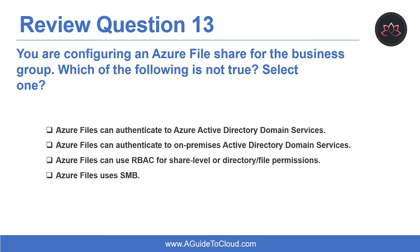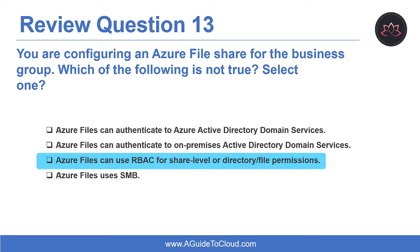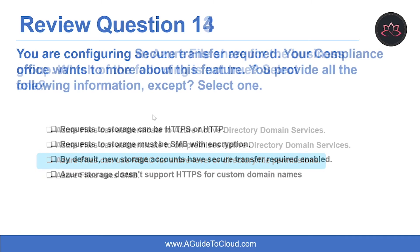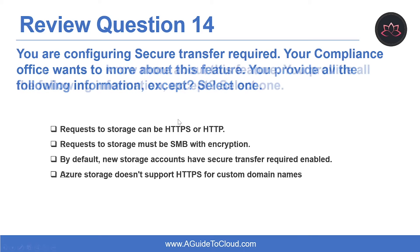Question thirteen: you are configuring an Azure file share for a business group. Which of the following is not true? The correct answer is: Azure Files can use RBAC for share-level or directory/file permissions. Only share-level permissions can use RBAC.